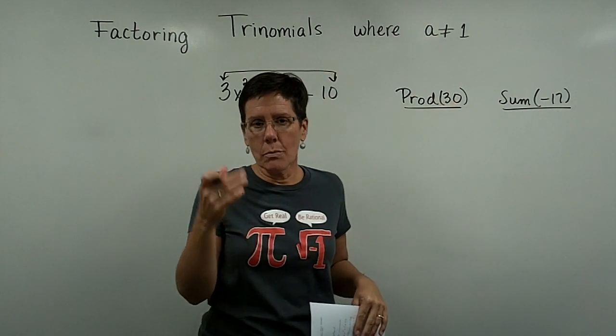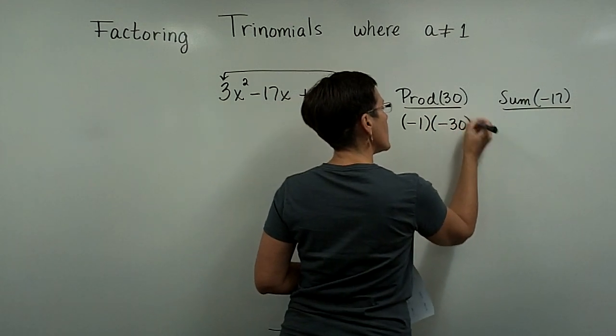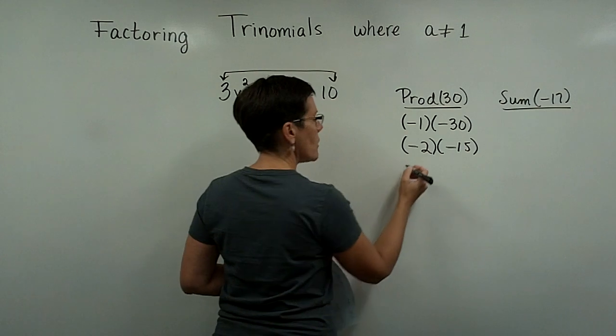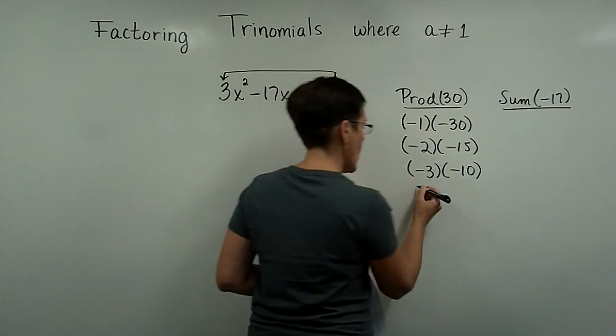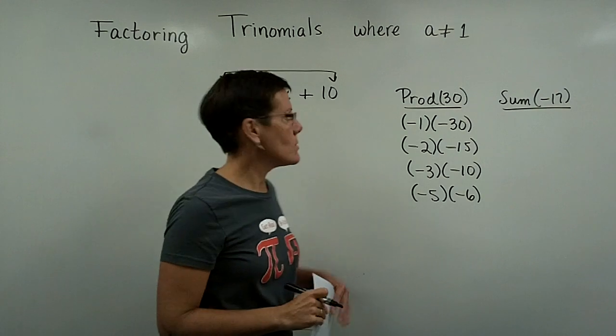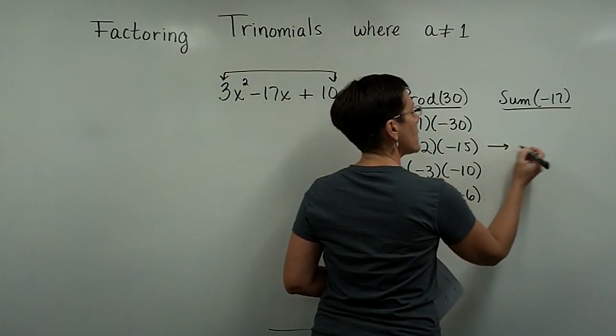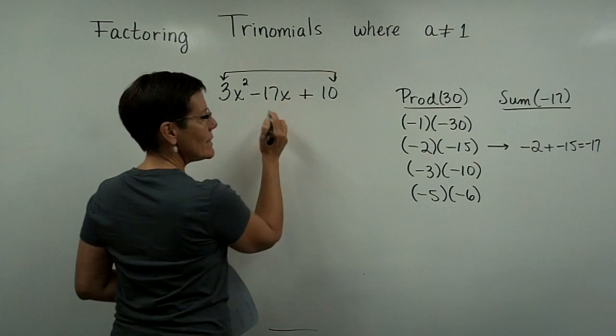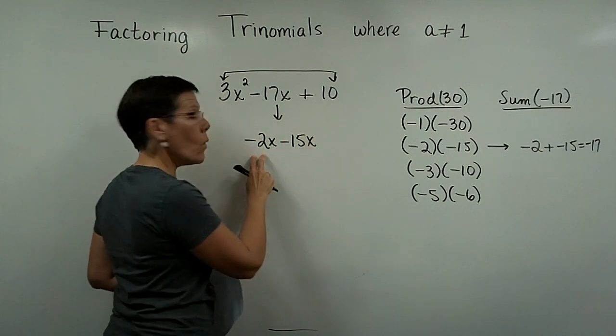Now this is a good example where I can show you my thought process in terms of listing. I always use one and the number itself and then I ask myself does two go into there. Those are all the numbers whose product is 30 and I'm looking for the pairing whose factors, this negative two and the negative 15, will add to be a negative 17.